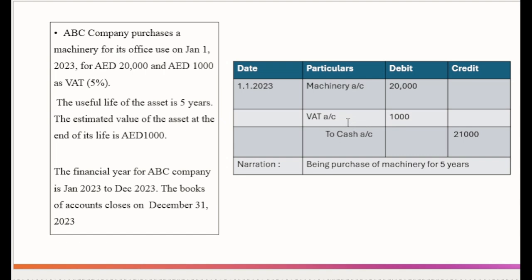When the company books a purchase entry and files the VAT returns, it gets the 1,000 back from the FTA authority. So totally the company pays 21,000, but the depreciation is calculated always on the 20,000, because that is the actual cost the company incurs. The 1,000 dirhams is a claimable amount — the government returns the 1,000 to the company.